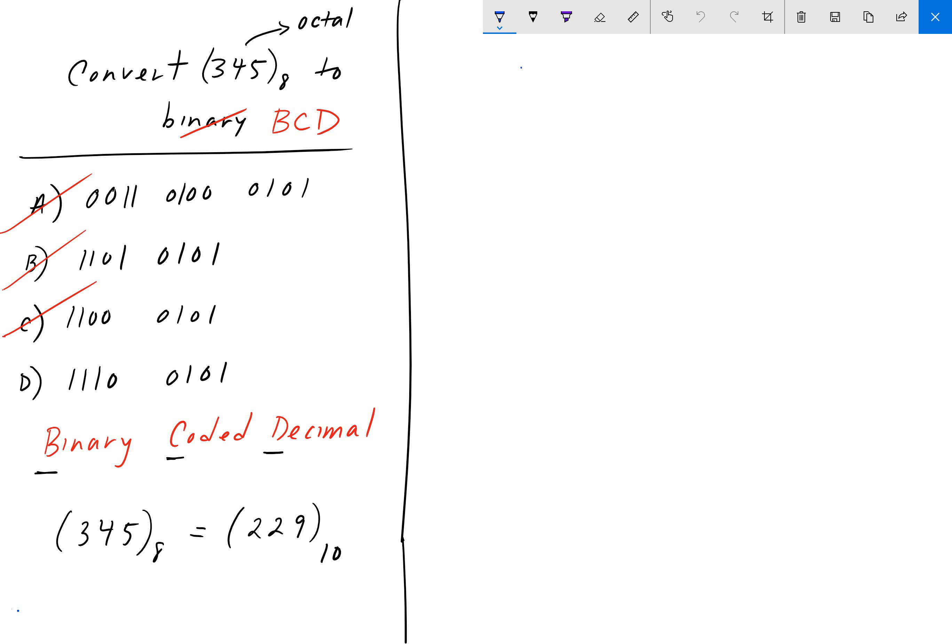For starters, we can write down this decimal equivalent here, 229, and what I'm going to do is put a comma between each digit.